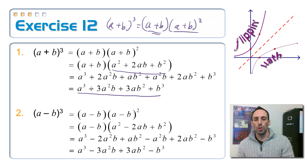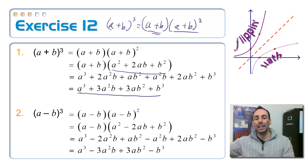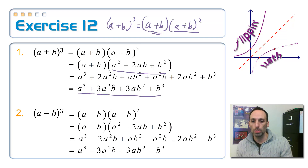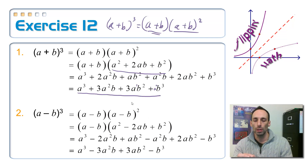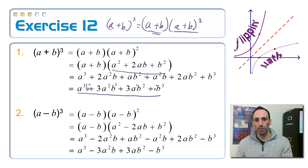The first term comes from a getting cubed, and the last term comes from b getting cubed. Look at the stuff in between: we have 3s as coefficients. The powers on a go: 3, 2, 1, 0 — they keep descending. The powers on b go: 0, 1, 2, 3 — they keep increasing. If we recognize this pattern, we can use it to cube out binomials very quickly. These are called cubes of binomials.